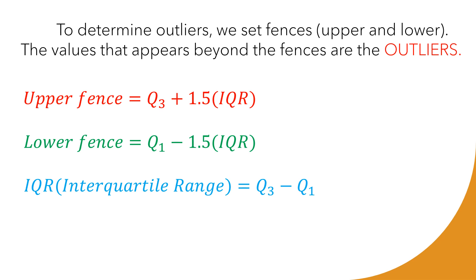It seems we need quite a few things before we can find the outliers, so let's make it simple with a step-by-step process. To find the outliers: first, compute Q1; second, compute Q3; third, find the interquartile range; and the fourth and fifth steps are to set up the upper and lower fences.